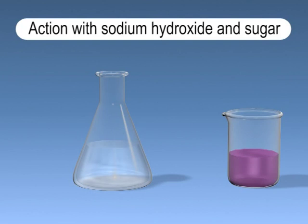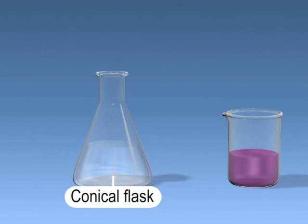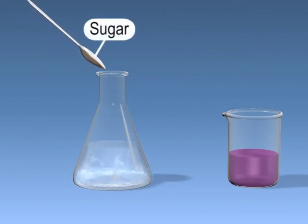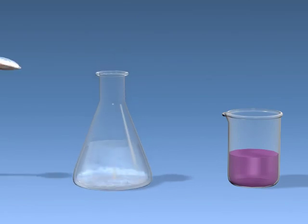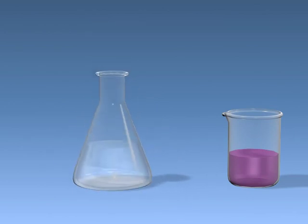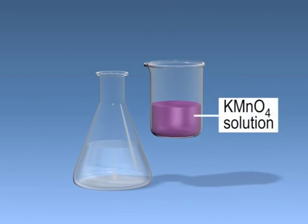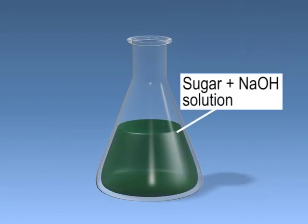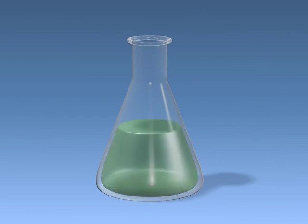Let us discuss the action of sodium hydroxide and sugar on potassium permanganate solution. Take a conical flask, add sodium hydroxide solution and dissolve sugar completely into it. Then add potassium permanganate solution. The initial purple color of potassium permanganate turns green when added to the flask containing sugar and sodium hydroxide. After some time the green color disappears and the solution turns colorless.